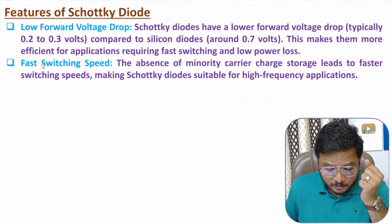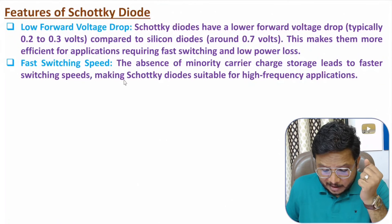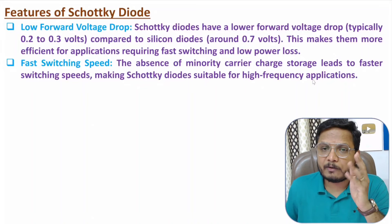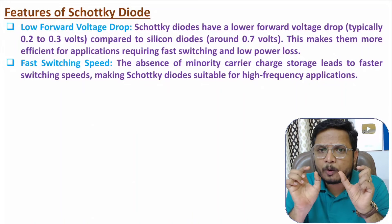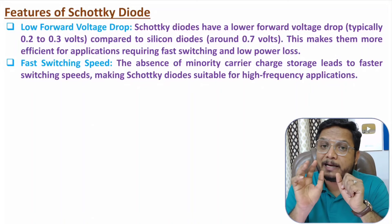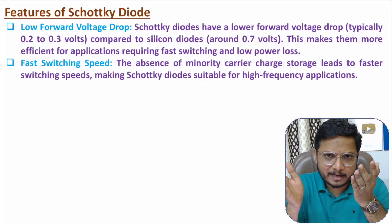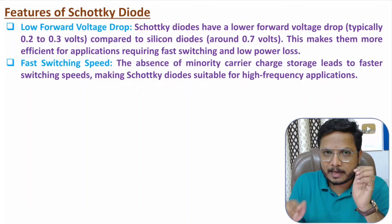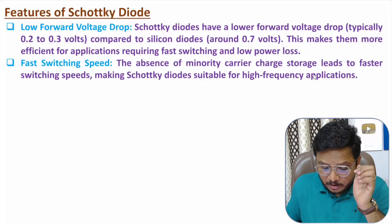The Schottky diode has fast switching speed. The absence of minority carrier charge storage leads to faster switching speed, making it suitable for high frequency applications. Since the Schottky diode has a metal-semiconductor junction with N-type semiconductor only, there are no minority charge carriers — majority charge carriers are electrons — which results in faster switching speed and enables high frequency applications.